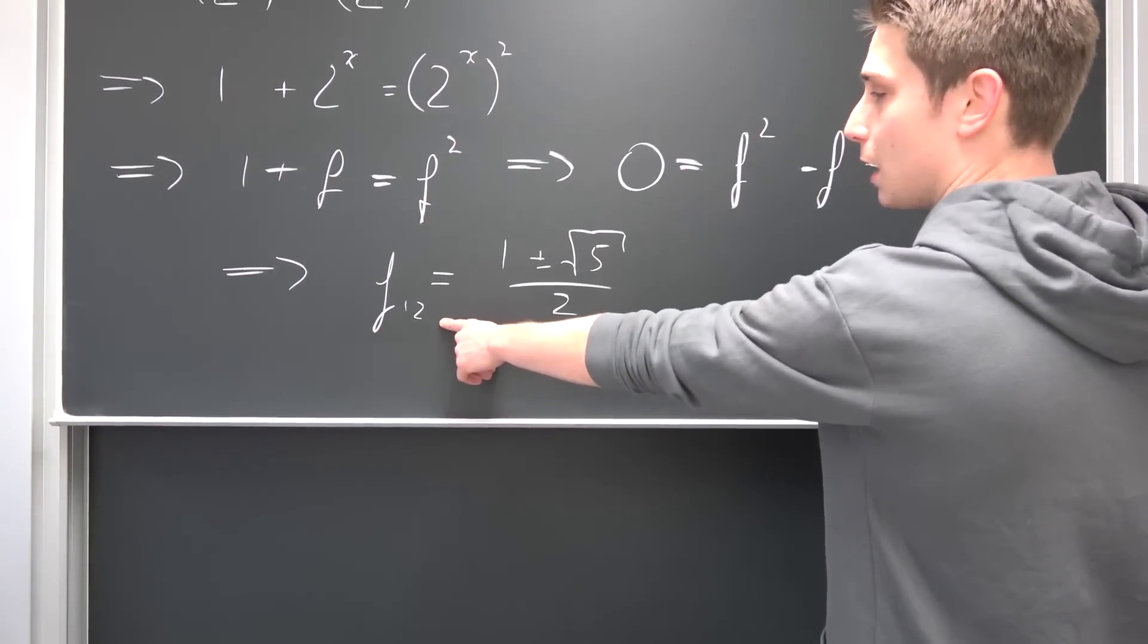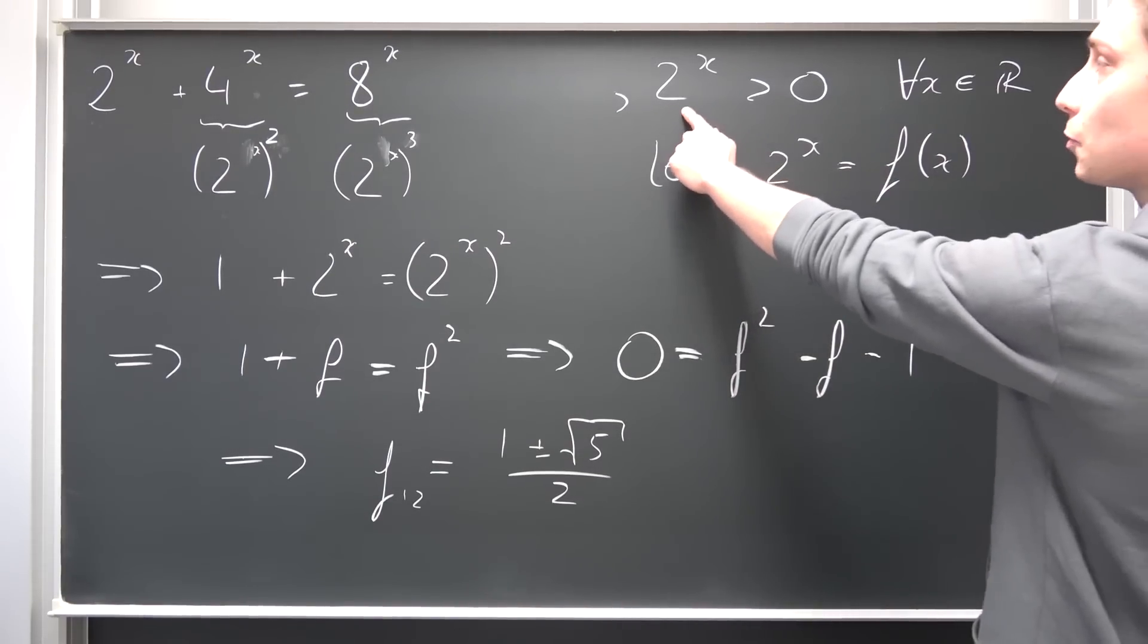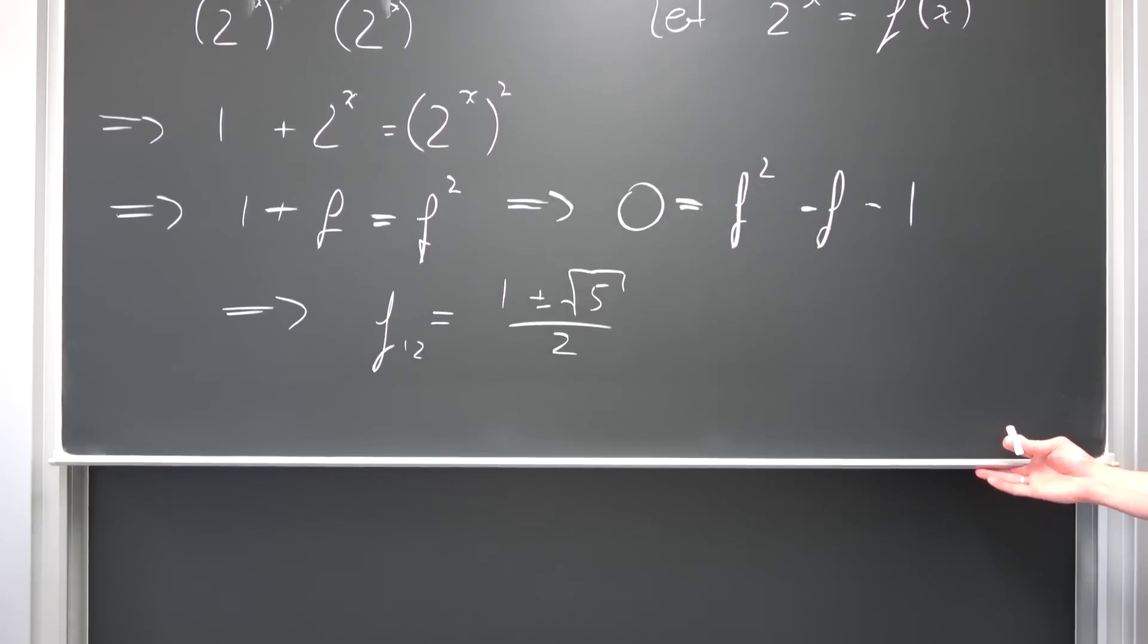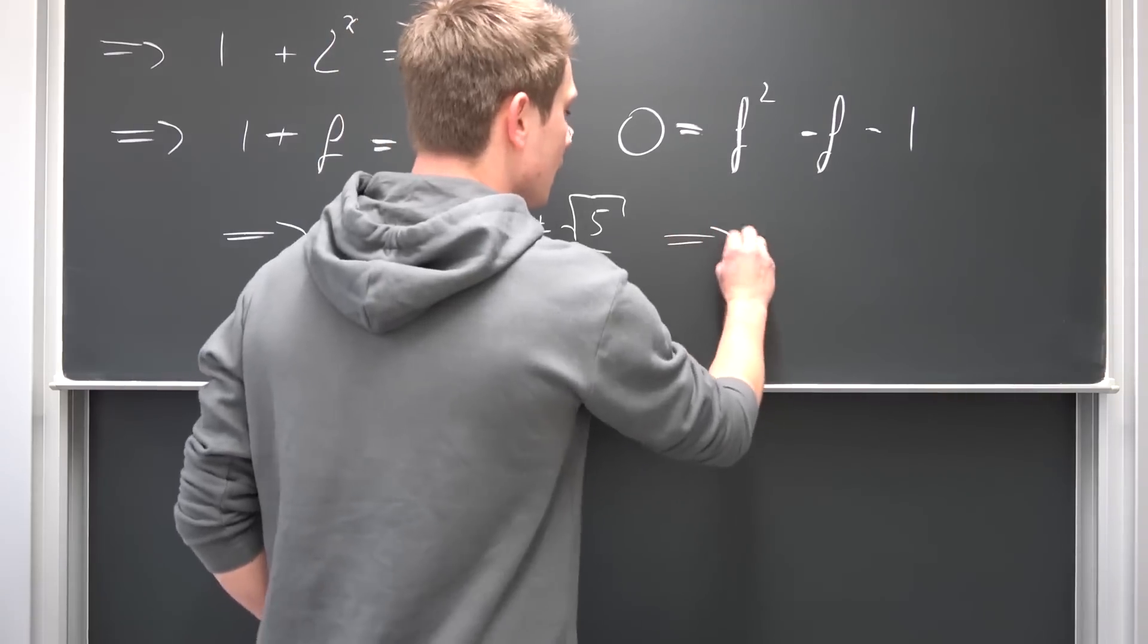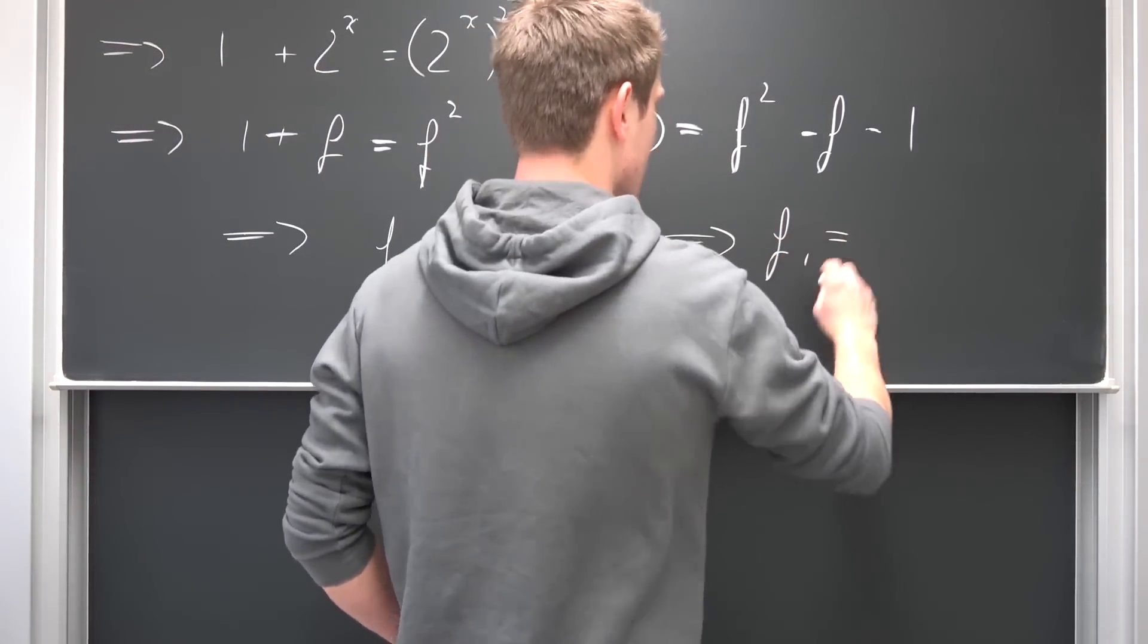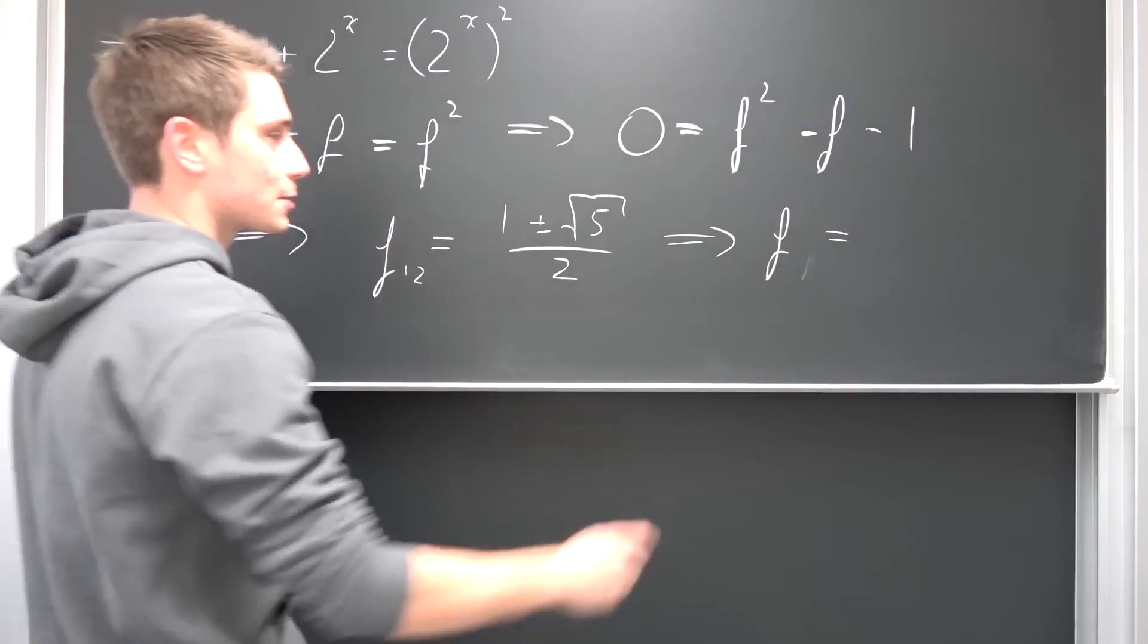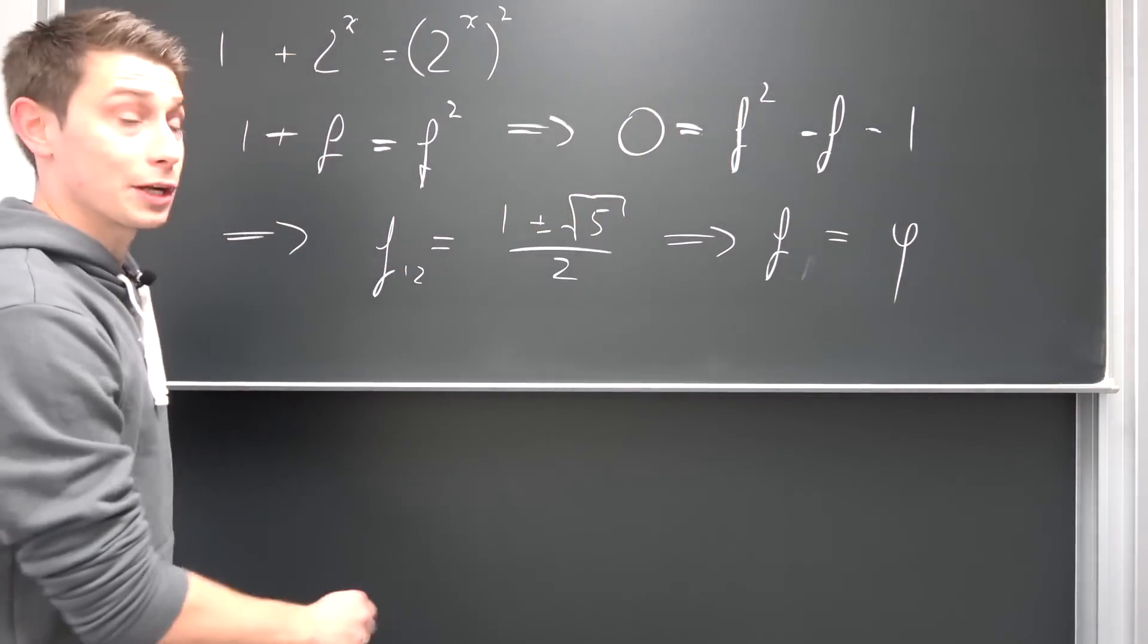And now I want you guys to notice that our f that we have right here is nothing other than 2 to the x power. But we have seen before that 2 to the x power is always strictly greater than zero for all x in R, meaning overall we are just going to choose the positive branch of this whole thing. And the positive branch is just 1 plus square root of 5 over 2, meaning it's just our golden ratio. So f1 is equal to, overall the solution to our 2 to the x power, to our polynomial, is going to be just our boy phi.